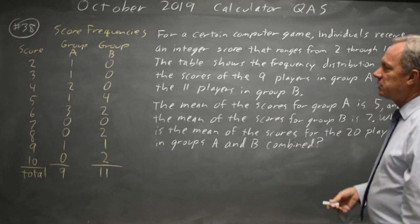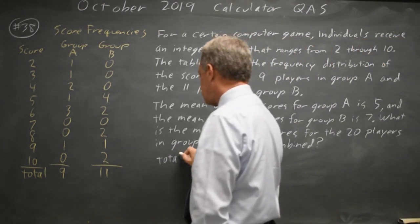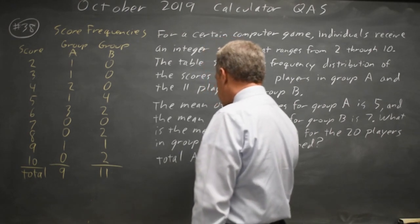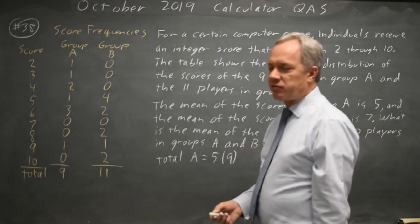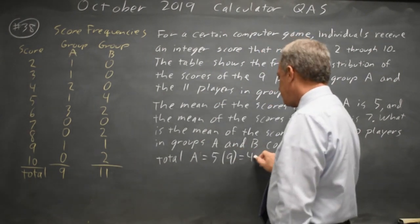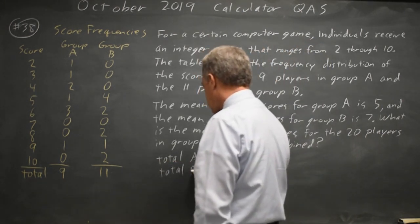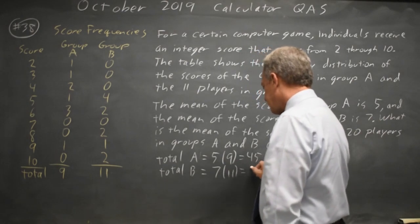They tell us the mean for A is five. So the total for A is five, the mean, times nine. The number of values we have is 45. And the total for B is the mean, seven, times the number of values, 11, is 77.